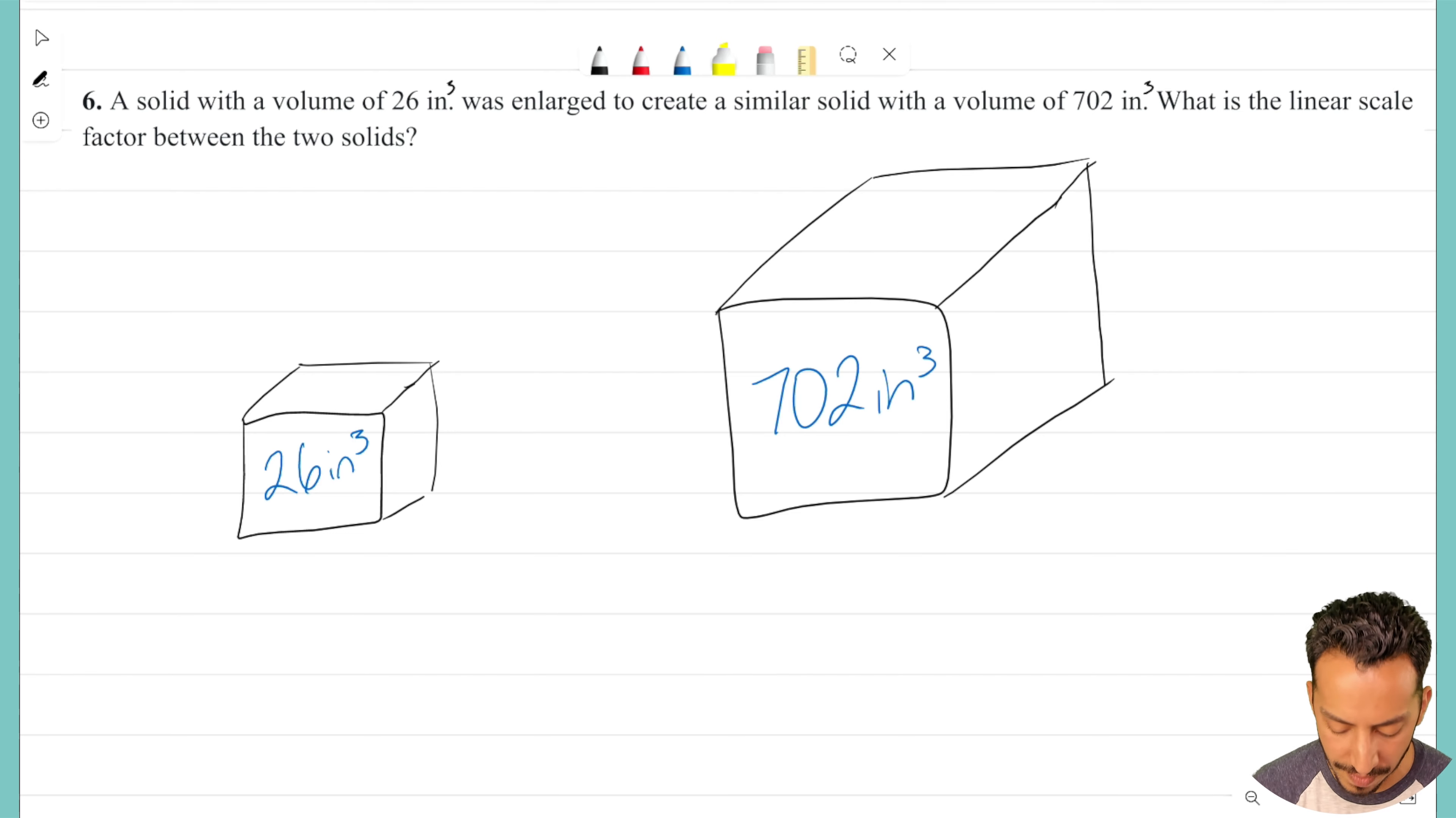Well, linear scale factor has to do with what am I multiplying my sides by to enlarge the shape, right? I don't know what this side length was. I don't know what this new one is. But I know that it's enlarged by some number. I'm multiplying by something to create that new larger solid.